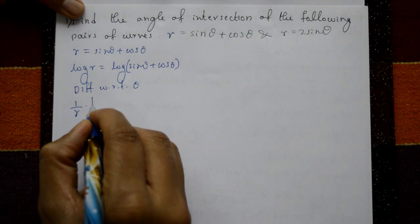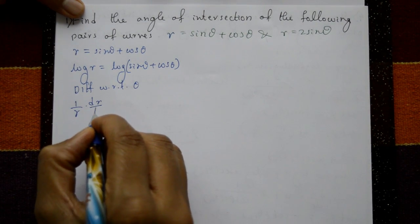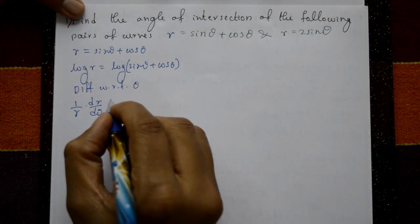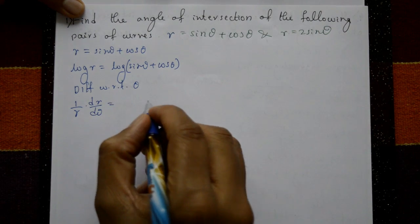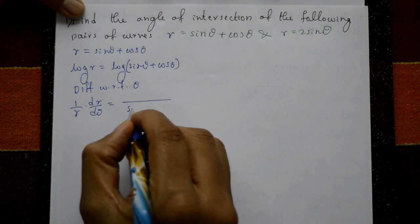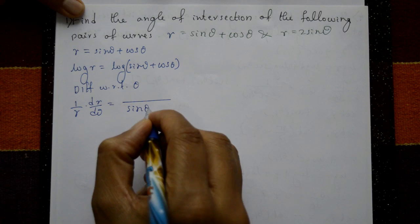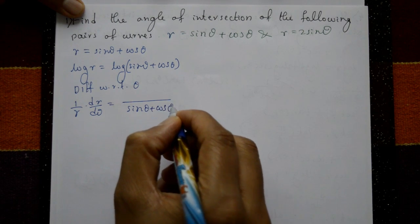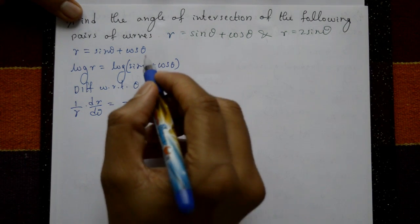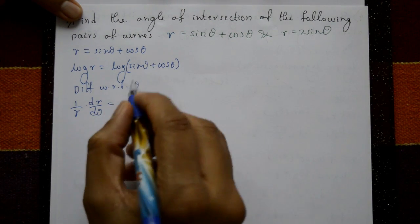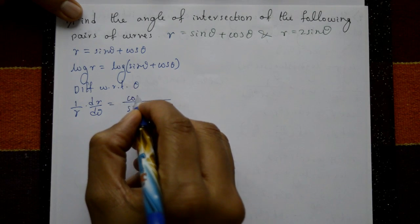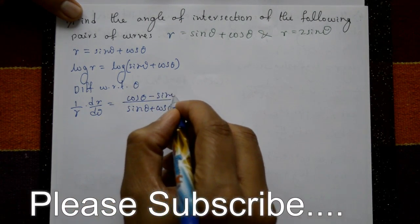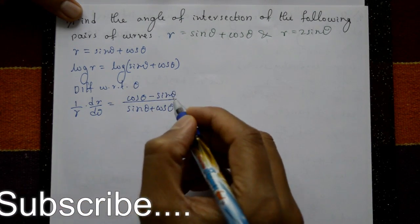This gives (1/r)(dr/dθ) = [1/(sinθ + cosθ)] · (cosθ − sinθ), where differentiating sinθ gives cosθ and differentiating cosθ gives −sinθ in the numerator.